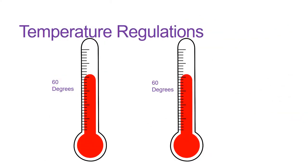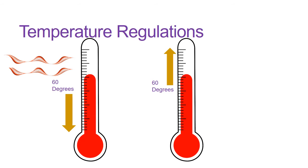When the outside temperature drops below 60 degrees, the heat will turn on and you will not be able to access the air conditioning. When the temperature outside rises above 60 degrees, the air conditioning will come on and you will not be able to access the heat.